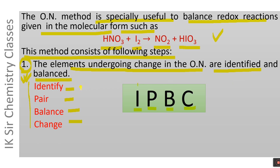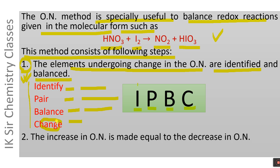First of all, the elements undergoing change in oxidation number are identified and paired up. Then those elements which undergo change in oxidation number are balanced — not all elements, only those that change oxidation number during the reaction. In the final sub-step, the change in oxidation number for each pair is determined. In the second step, the increase in oxidation number is made equal to the decrease in oxidation number.